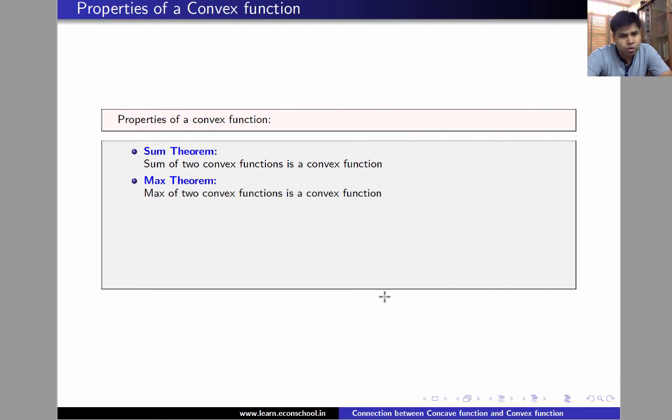So if you recall, min theorem was true for concave functions. So min of two concave functions was concave. In case of convex function, we have a max theorem which tells us that max of two convex functions is convex.